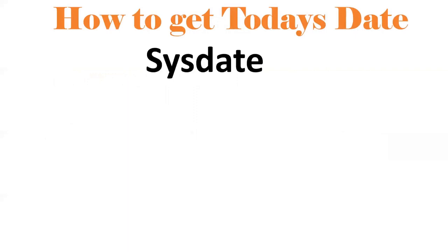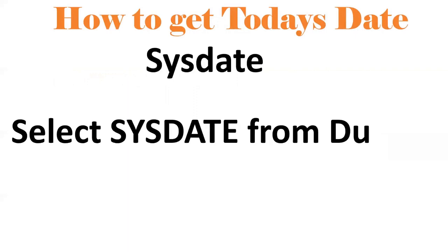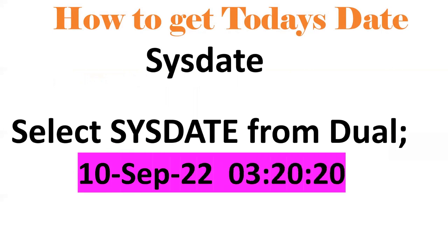Next, how to get today's date. If I want to get today's date in Oracle SQL, we can use SYSDATE. So SELECT SYSDATE FROM DUAL will give the date, month, year, hours, minutes, seconds, and AM or PM. We can get the current date as a full timestamp.